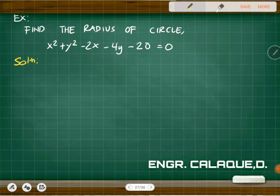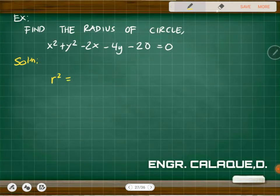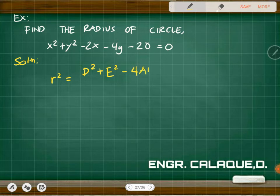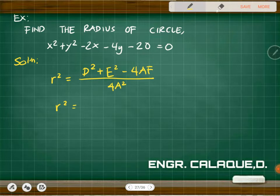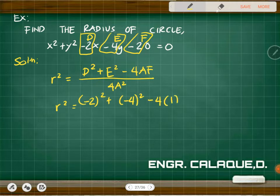So we have x squared plus y squared minus 2x minus 4y minus 20. We need to find the radius, so we can use the formula: r squared equals d squared plus e squared minus 4af over 4a squared. So d is negative 2, e is negative 4, and f is negative 20. We have negative 2 squared plus negative 4 squared minus 4 times 1 — that's a which is 1 — times negative 20.